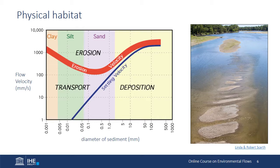Geomorphic features in the river are the physical templates for the habitats of many species. Naturally recurring flows at predictable times from year to year create and then recreate the substrates needed by organisms, which adapt their life history strategies to make use of available habitats at the predicted time of year. The figure on the left shows the relationship between flow velocity and the diameter of sediment that can be transported — velocity increases with increasing flow magnitude, selectively eroding, transporting, and redepositing sediment grains as flow magnitudes rise and fall.